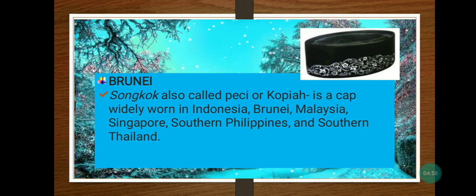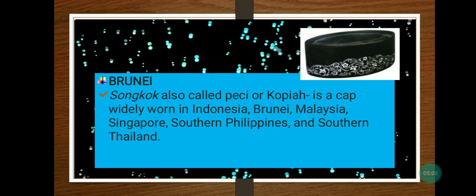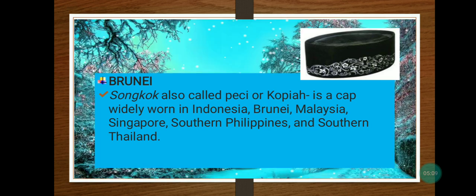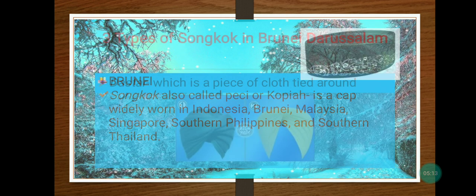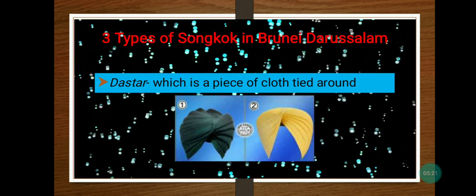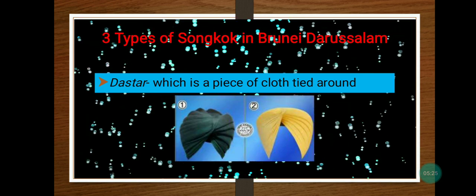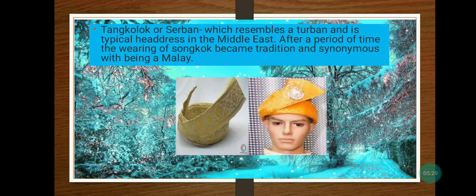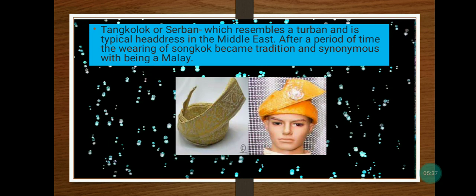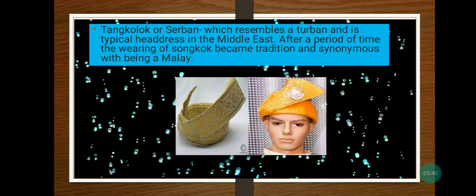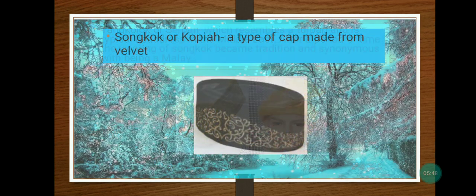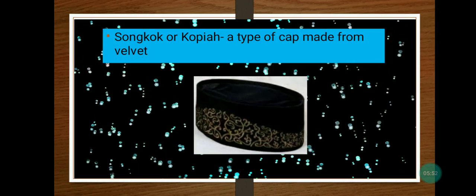In Brunei, the songkok, also called kopia, is a cap widely worn in Indonesia, Brunei, Malaysia, Singapore, southern Philippines, and southern Thailand. There are three types of songkok in Brunei Darussalam: first is the dastar, a piece of cloth tied around the head; second is the tangkulok or sivan, which resembles a turban and is typically a headdress from the Middle East. After a period of time, the wearing of the songkok became a tradition synonymous with being Malay. The third type is the songkok or kopia, a type of cap made from velvet.